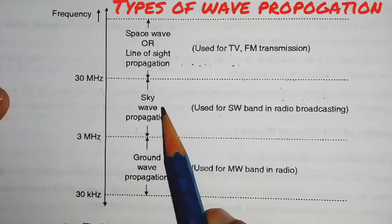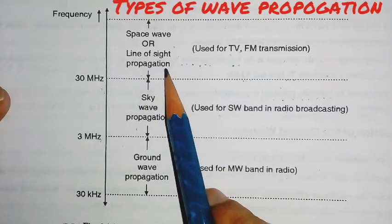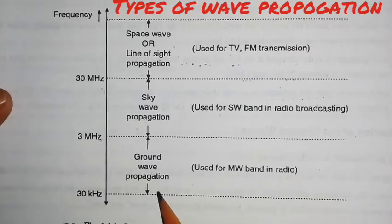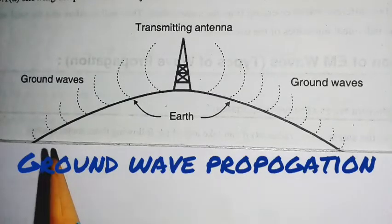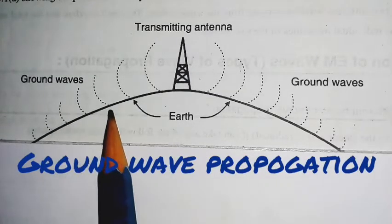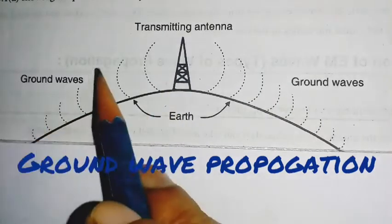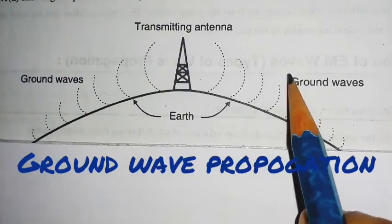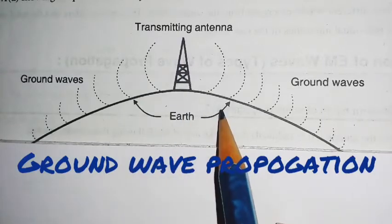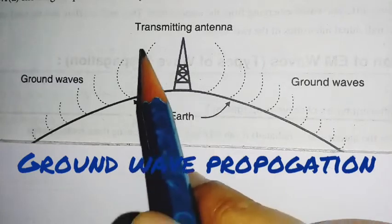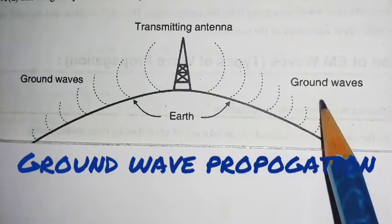So the three types of wave propagation are: first, ground wave propagation; second, sky wave propagation; and third, space wave or line-of-sight propagation. Today we will look at ground wave propagation in detail. This is the diagram for ground wave propagation. This is the transmitting antenna on the earth, and the waves transmitted are on the ground and are vertically transmitted.